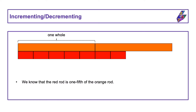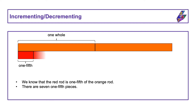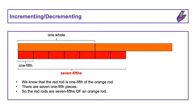We know that the red rod is one-fifth of the orange rod. There are seven one-fifth pieces: one one-fifth, two one-fifths, three one-fifths, four one-fifths, five one-fifths, six one-fifths, seven one-fifths. So the red rods are seven-fifths of an orange rod, or seven-fifths of one whole. We can write this in words as seven-fifths, or as a numeral, seven-fifths.